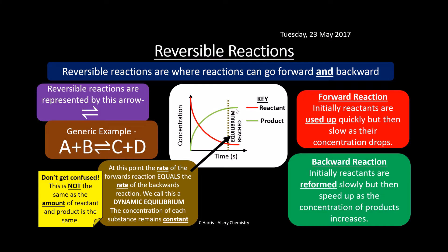At dynamic equilibrium, the concentration of each substance remains constant. Be really careful with your wording here — don't confuse this with the idea that the amount of reactant and product is the same. We're saying the concentration of each substance remains constant, not that reactants and products are equal in amount. At equilibrium we've got less reactant than product, but both are flat-lining.